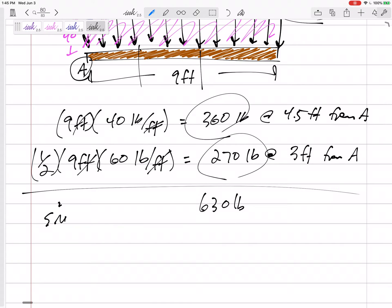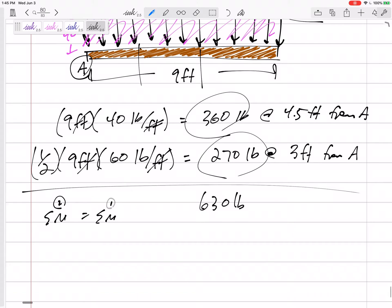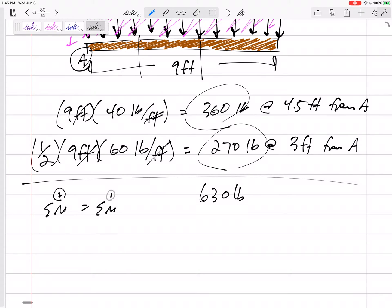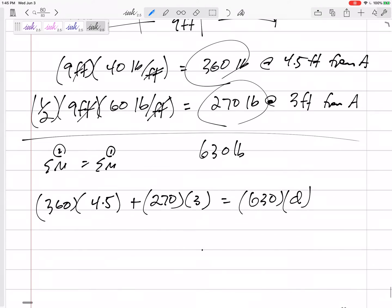And then the location, let sum of the moments as if they're separate would equal the sum of the moments as if they're one force. Separately, it's 360 that's acting 4.5 feet away from A and 270 that's acting three feet away from A would be the same if it's just 630 that's acting some distance D away from A. Solve that equation for D. D would be 3.86 feet.